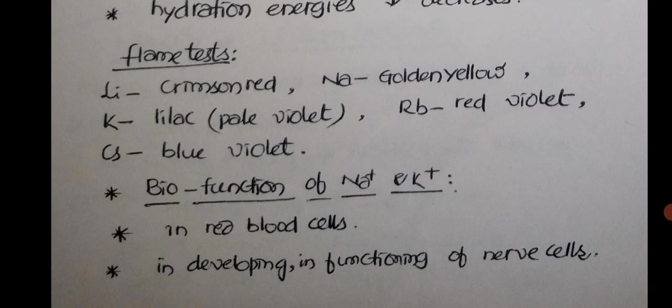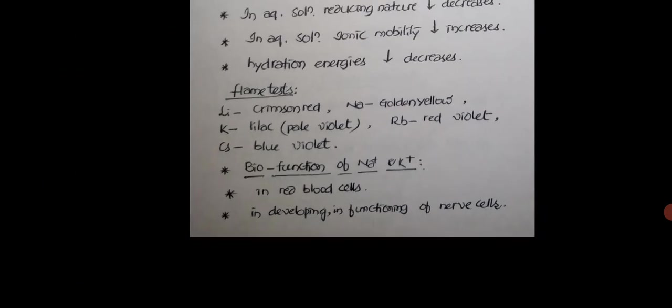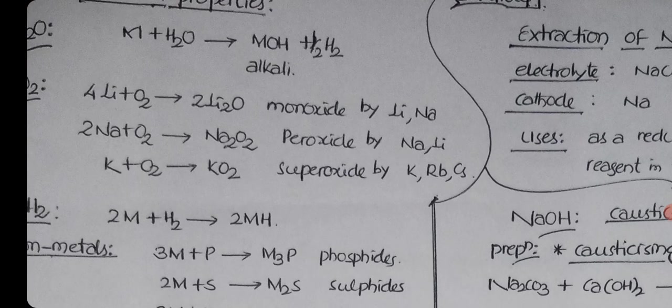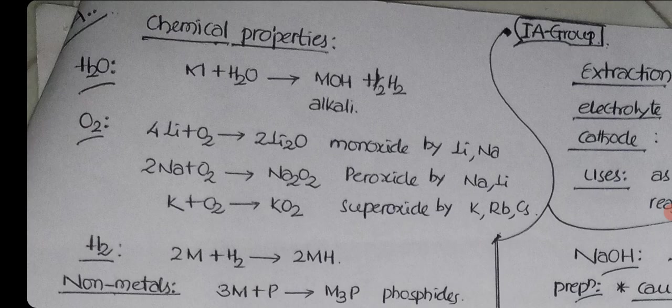Biological functions of sodium and potassium: they are useful in red blood cells, in developing and functioning of nerve cells. The chemical properties, general chemical properties, we will see.